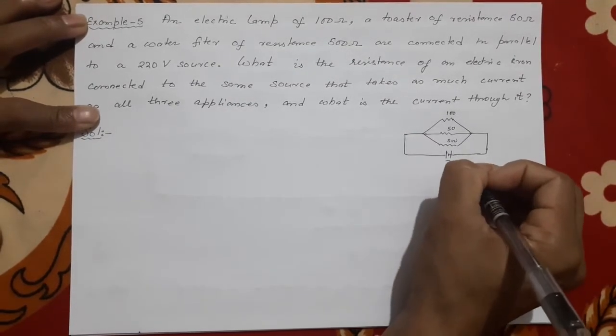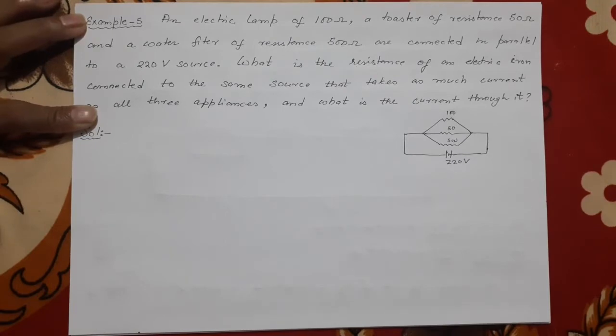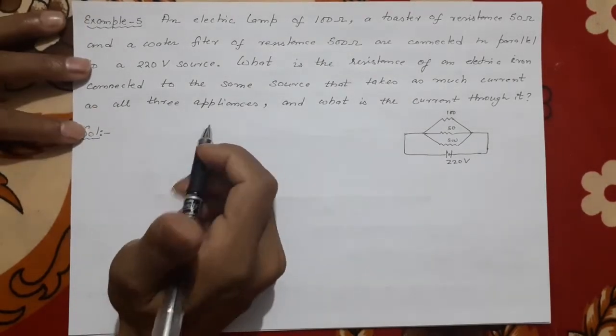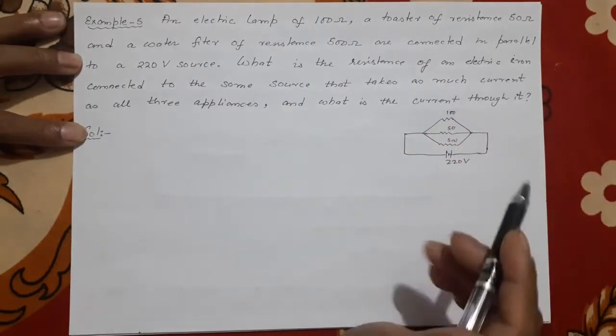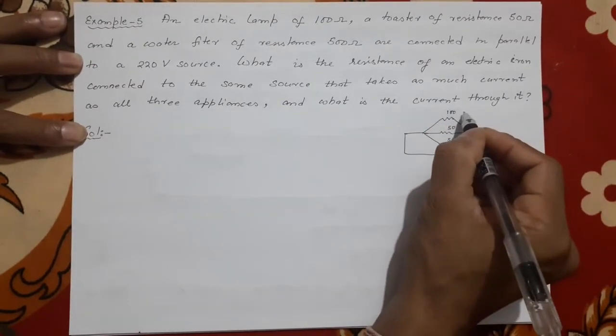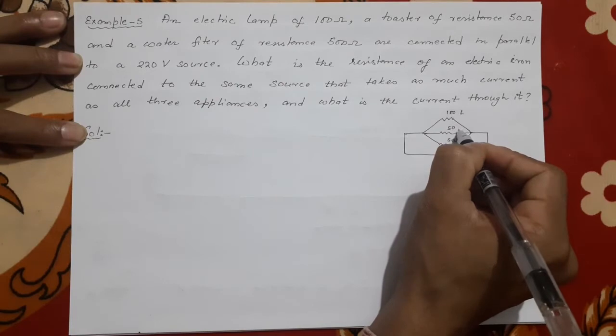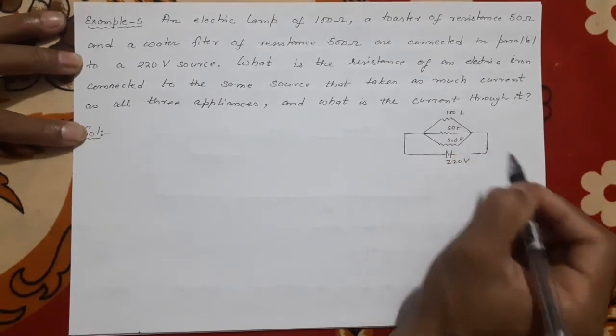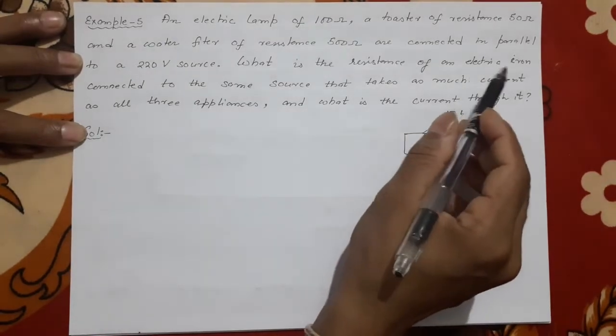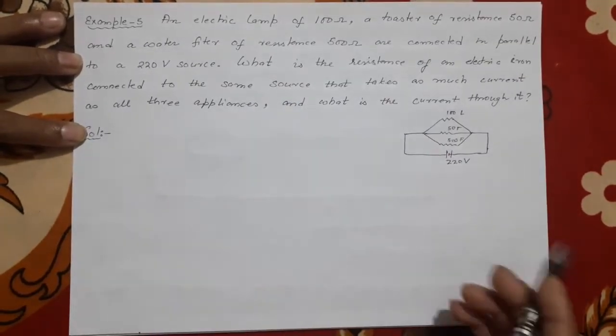This much, and the source is 220 volt. Maybe this is AC source but no need, you can show like that. Now the main question is what? What is the resistance of an electric iron? Separate electric iron. This is lamp, this is toaster, and this is filter, but we want another electric iron connected in the same source separately.